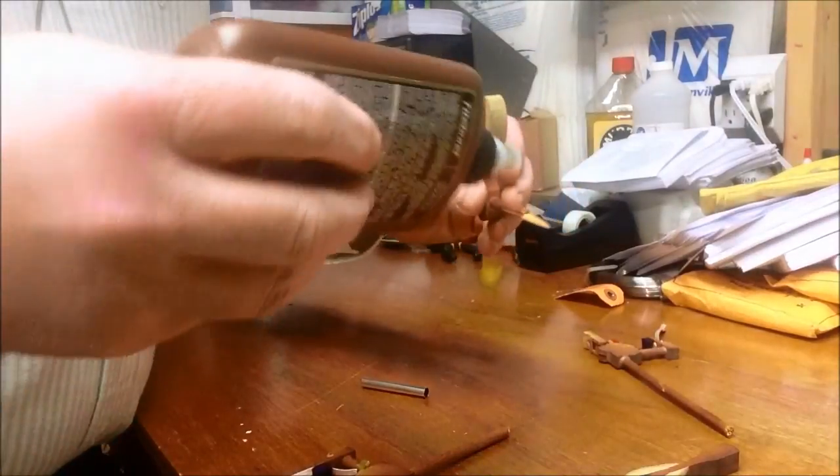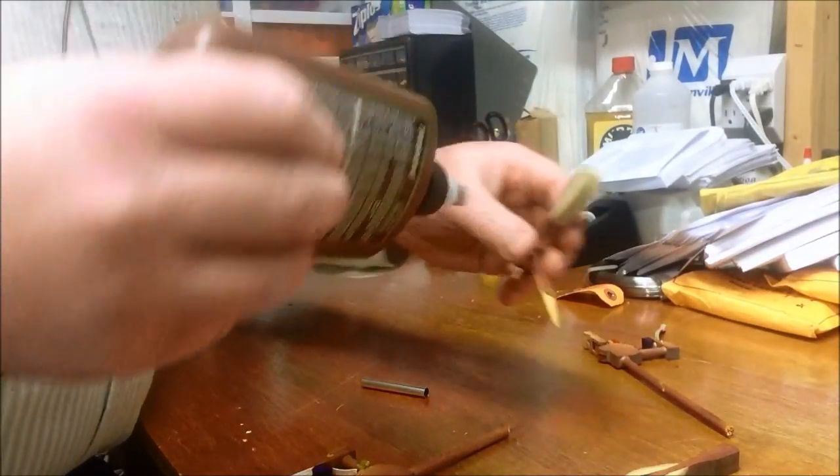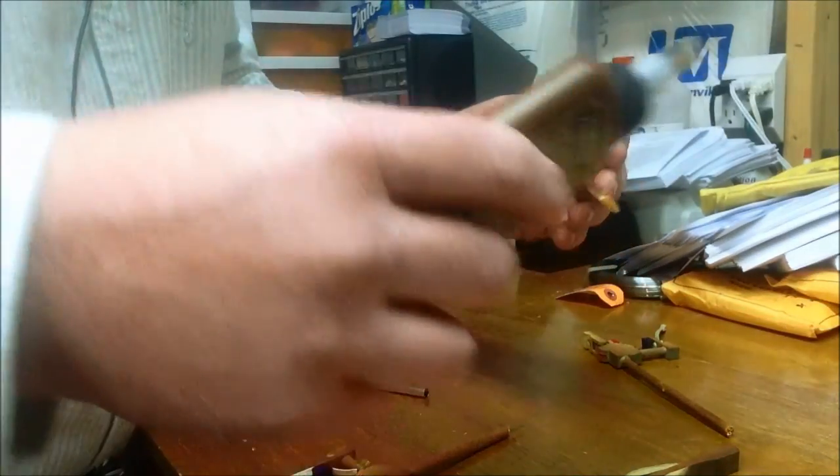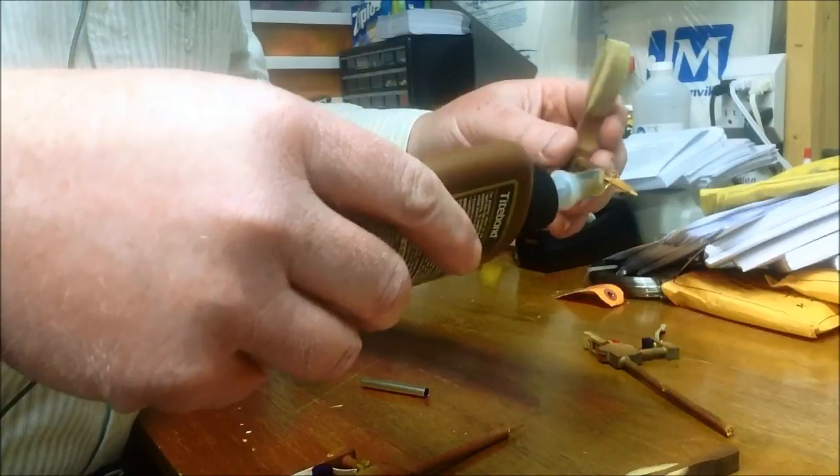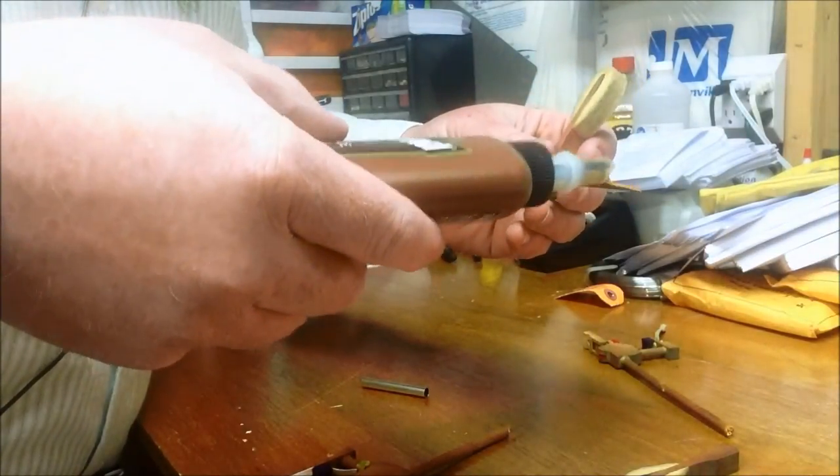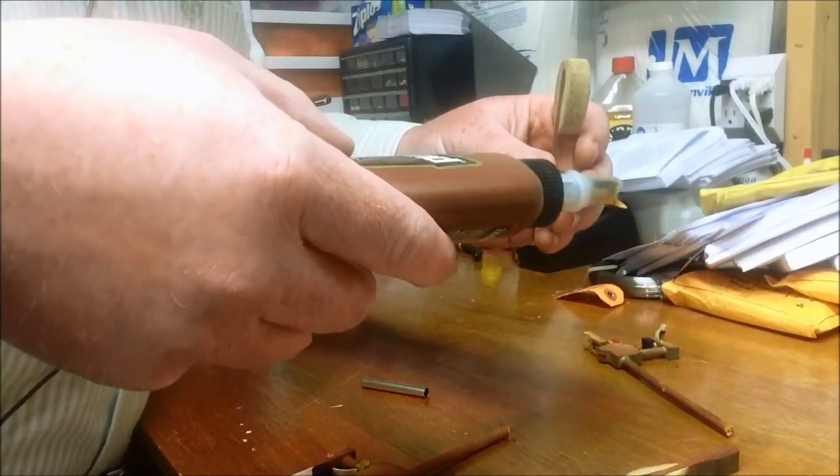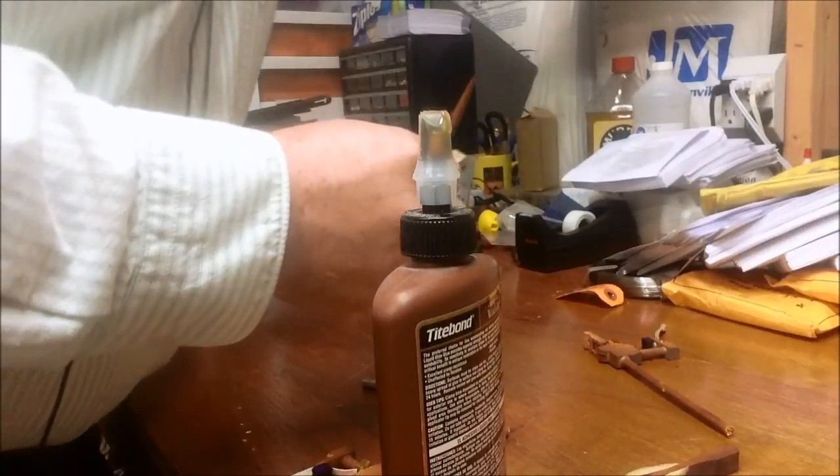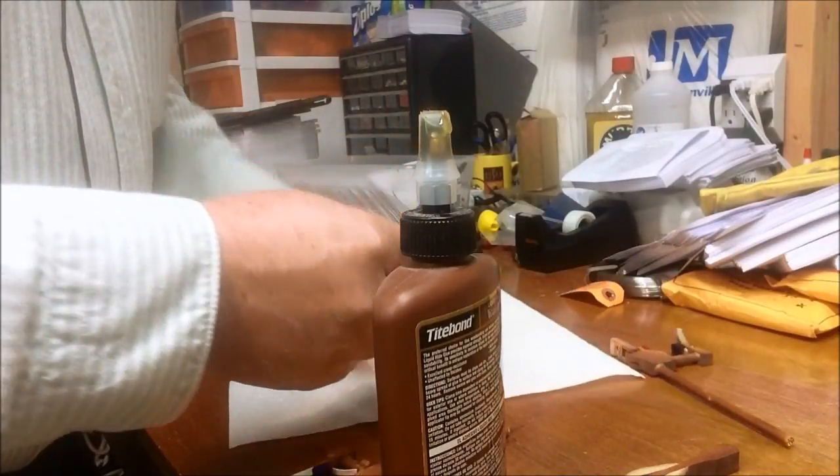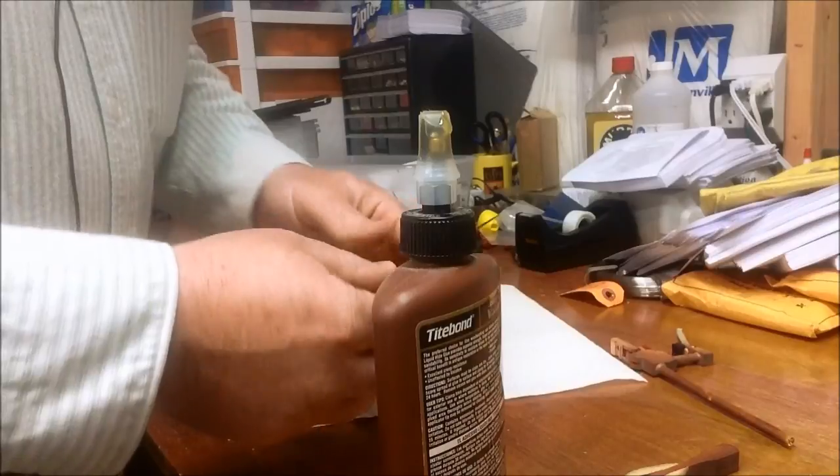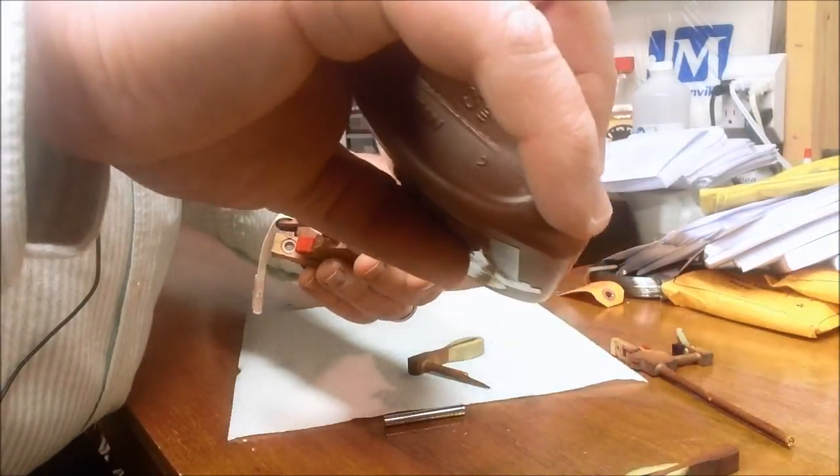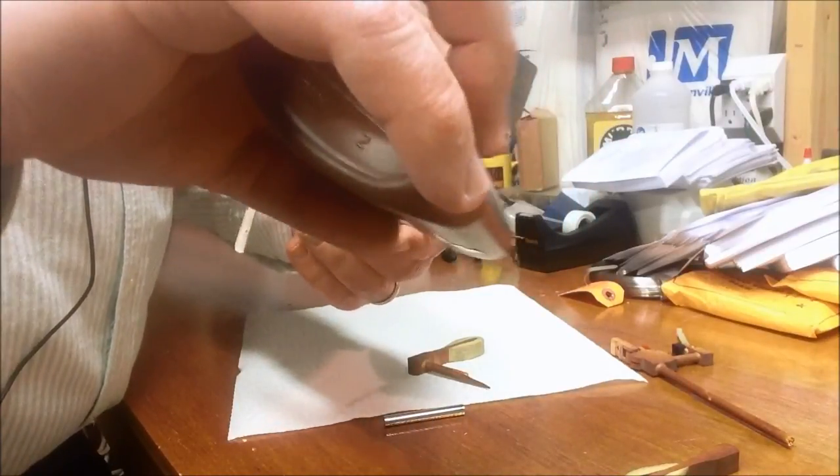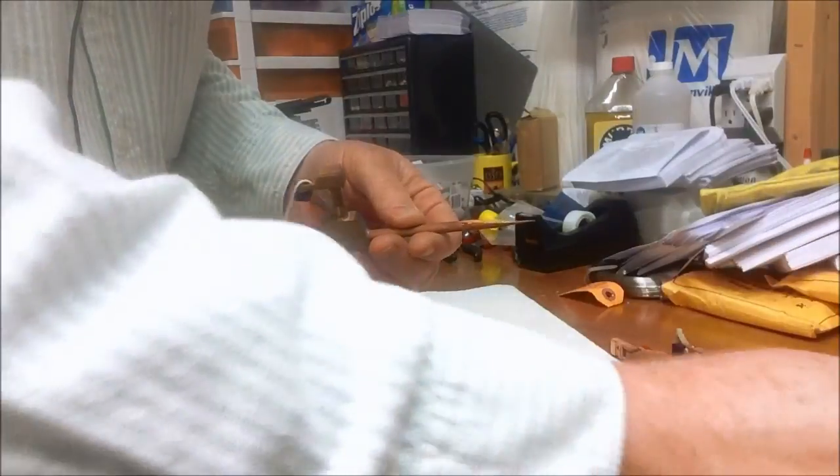So what I'm going to do here is just put a little bit of glue on the surface area. Just a dab, just enough to get it in all the areas, as many surface areas as you can. And I'm going to put it on both parts. If you get too much glue then you get a lot of oozing, but you want to make sure you have enough so the coverage is good.